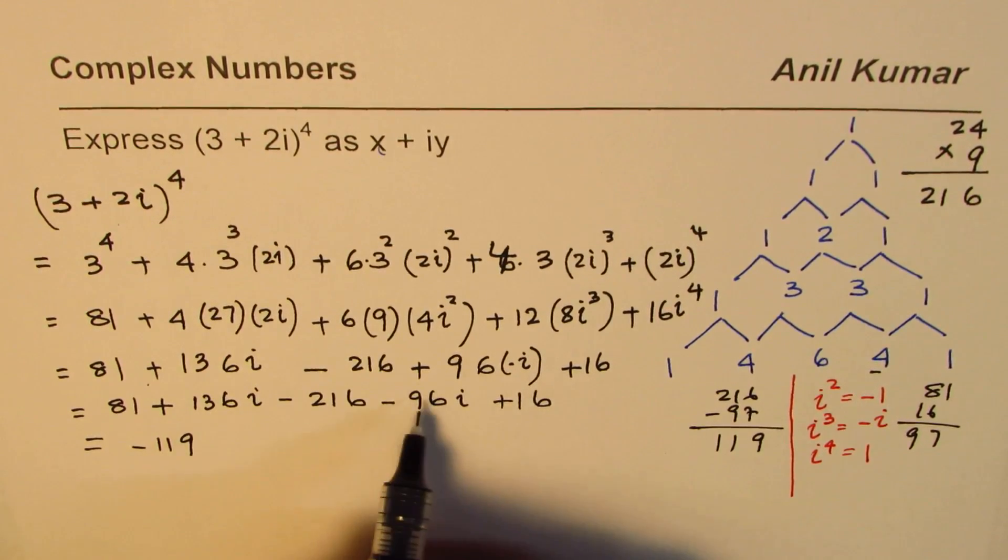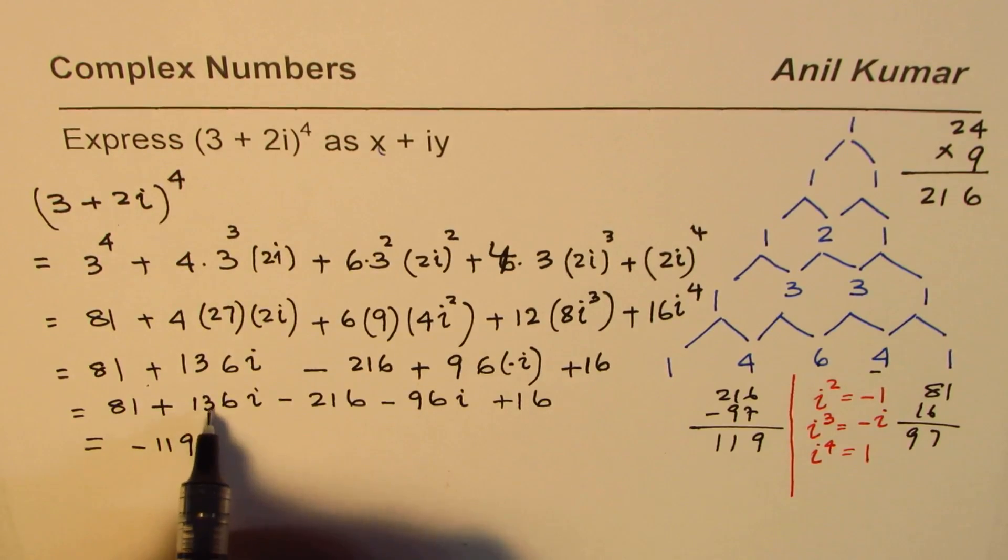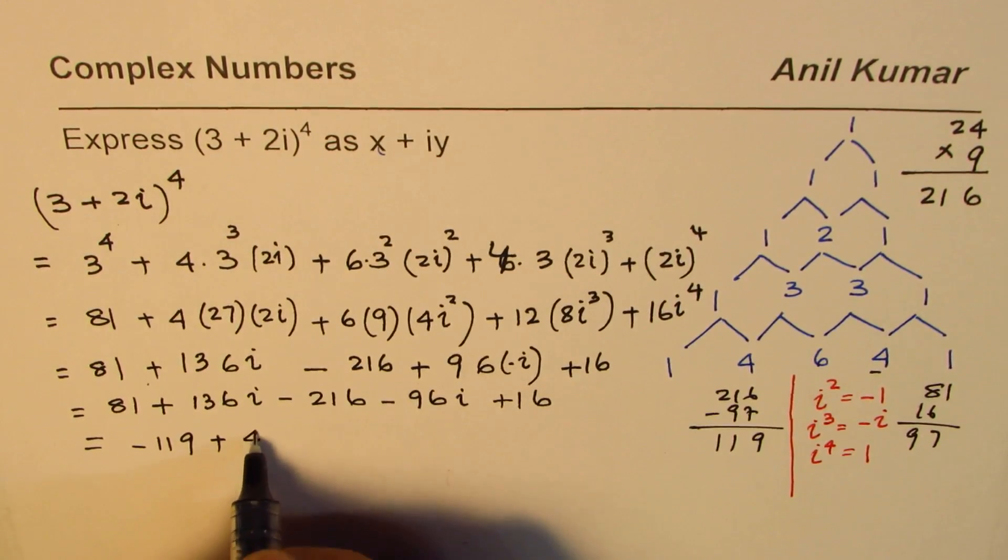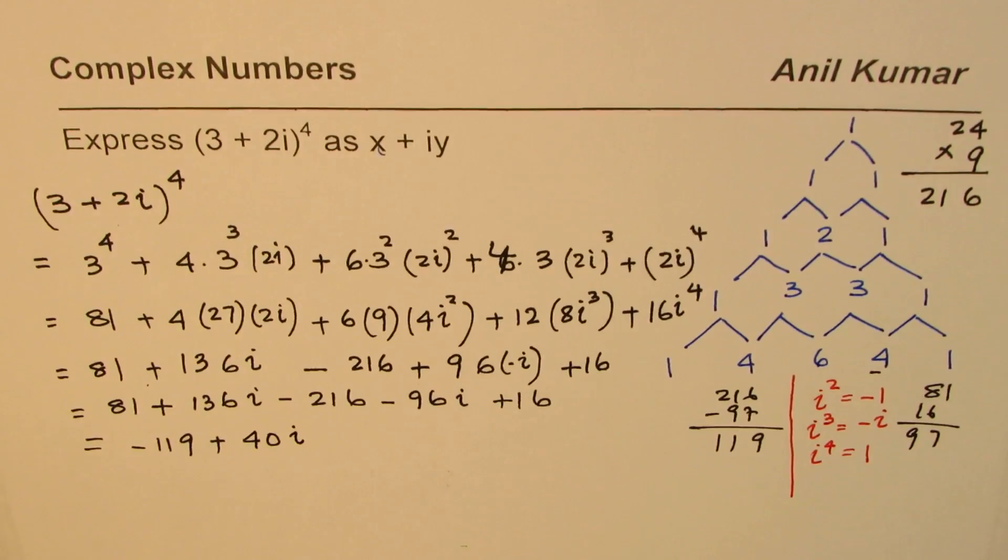As far as the i terms are concerned, we'll take away 96 from 216. So we have plus, this plus is bigger. 216 take away 96 is 4, so we have 40, 40i.